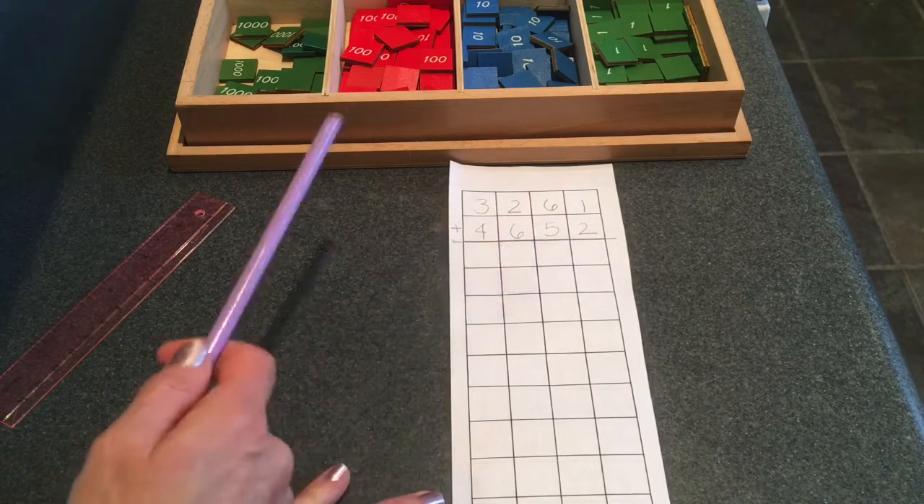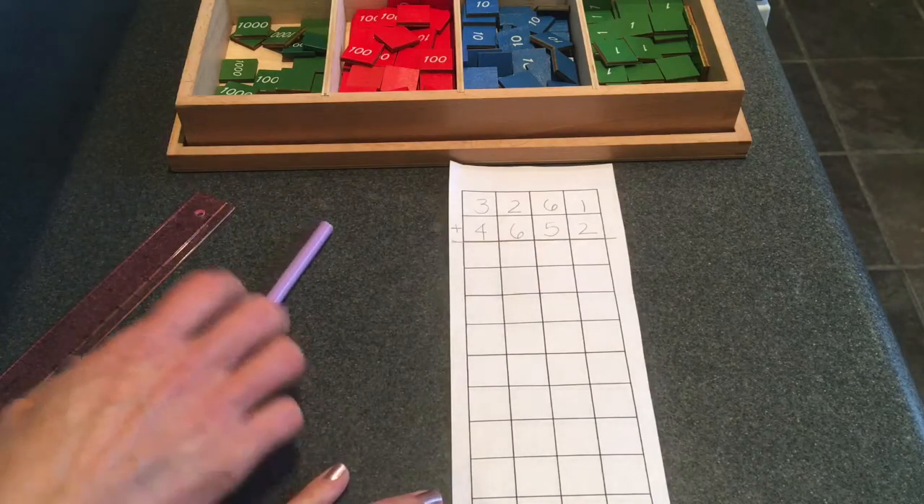Okay, so you can pause the video here and build three thousand, two hundred, six tens and one unit. And below that build four thousand, six hundred, five tens and two units. I'm going to build it too and then we'll check our work together.